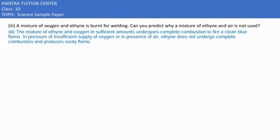Third part: they are saying the mixture of oxygen and ethyne is burnt for welding. Can you predict why a mixture of ethyne and air is not used? Why are they using oxygen? Because the mixture of ethyne and oxygen in sufficient amount undergoes complete combustion. Ethyne and oxygen go into complete combustion, so it will release less residue. Residue means dirty substances are released less because it gives a clean blue flame.